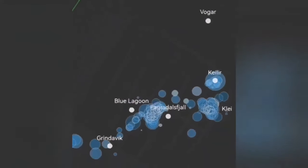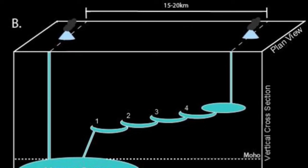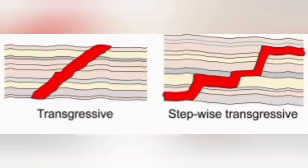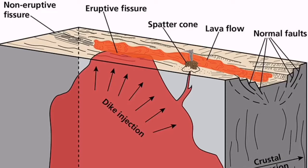This is the diagram or cartoon showing what I mean by this transgressive seal moving from what is Svartsengi at an angle toward the town of Grindavik, the vicinity, north part of it.